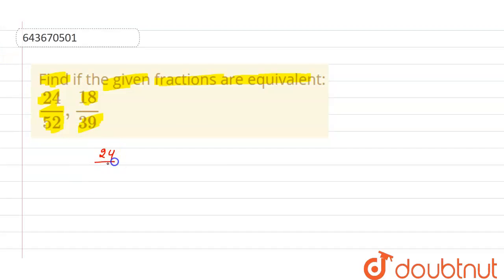24 divided by 52, comma 18 divided by 39. So we can cancel the first fraction with the table of 2 first and next we can cancel with the table of 3. So 24 divided by 52 will be cancelled with the table of 2.